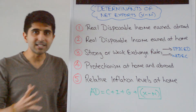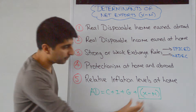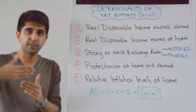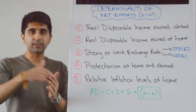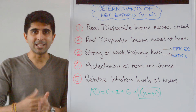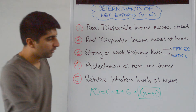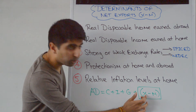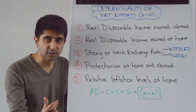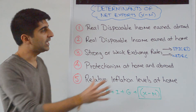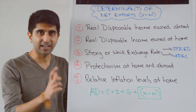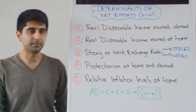So bear that all in mind — these are all the key determinants of X minus M. If X minus M goes up in value, AD will shift to the right. If X minus M goes down in value, AD will shift to the left. Looking at export revenues and import expenditures is key when you link all these factors to the X minus M equation.